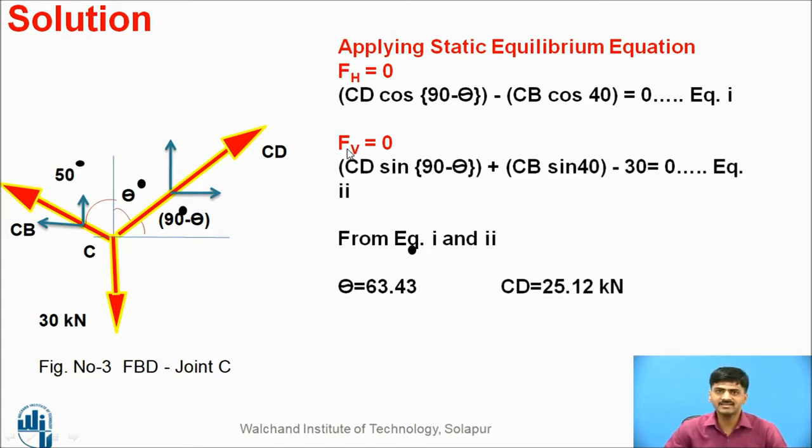Similarly, apply the second static equilibrium equation: summation Fy equals zero. All vertical forces, one downward: CD sin (90-θ) plus CB sin 40 minus 30 equals zero. Equate these two equations to identify the value of CD and θ. After calculation, CD comes 25.12 kilonewton and θ equals 63.43 degrees.